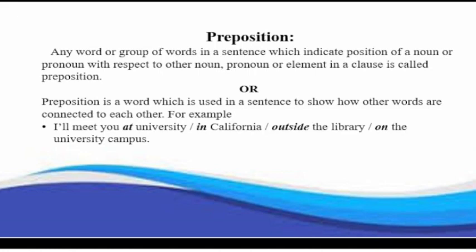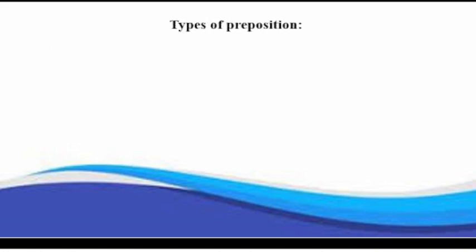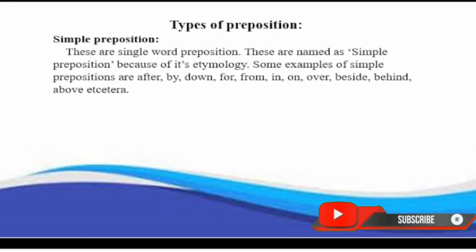Preposition can be divided into following types. Simple preposition: These are single word preposition. These are named as simple preposition because of its etymology. Some examples of simple prepositions are after, by, down, for, from, in, on, over, besides, behind, above, etcetera.